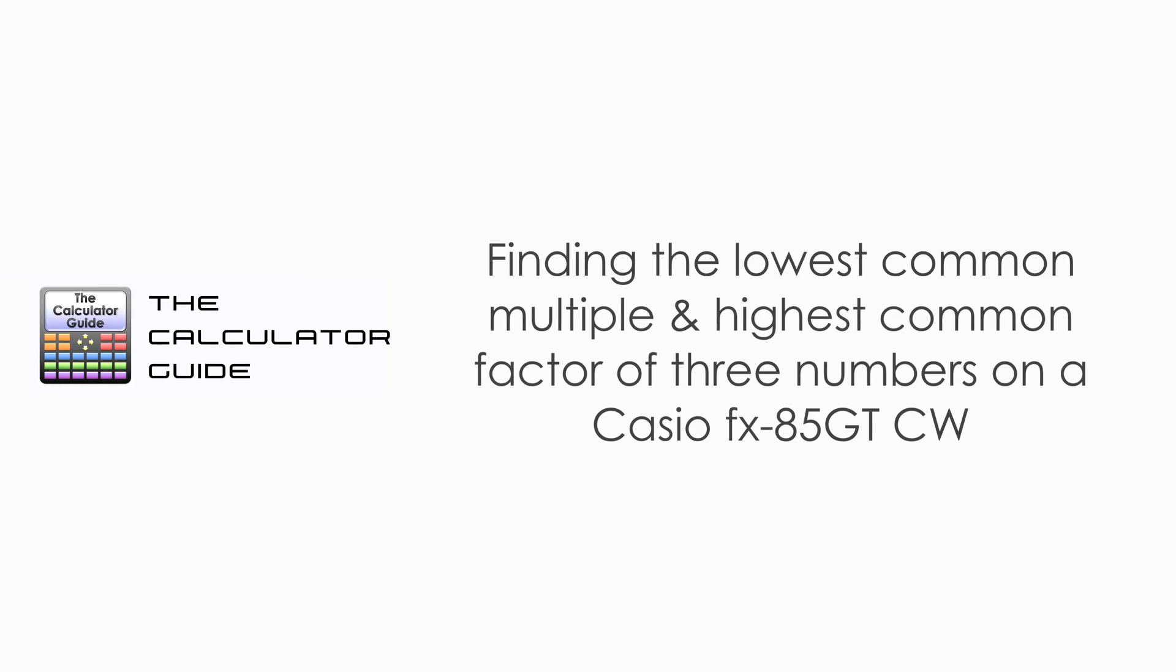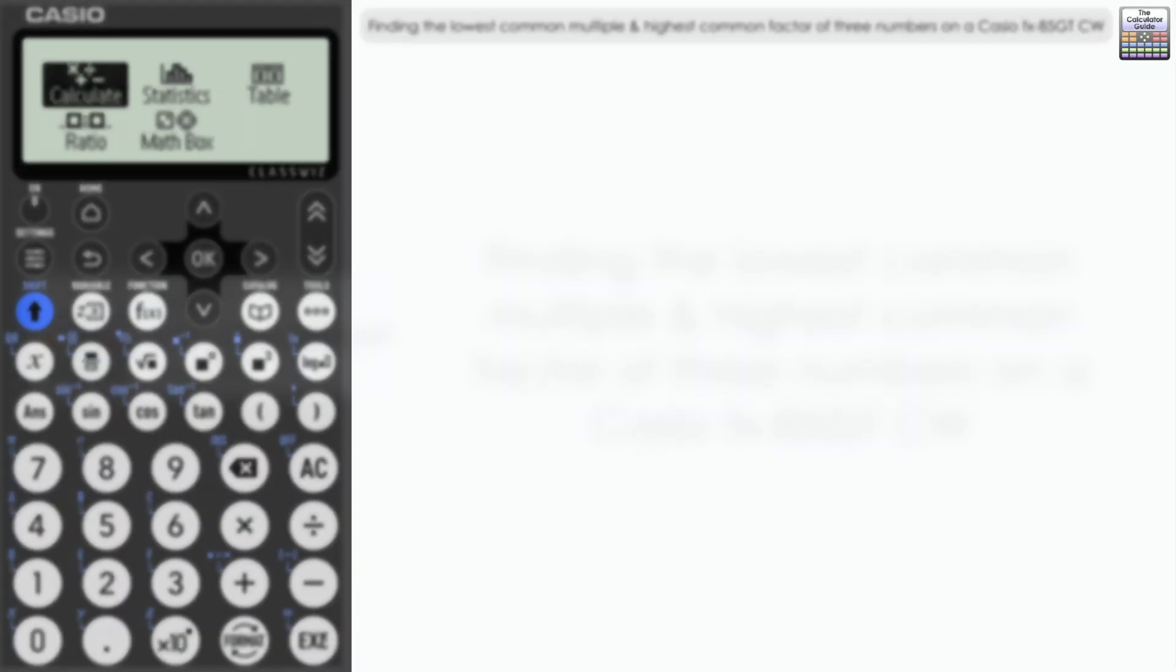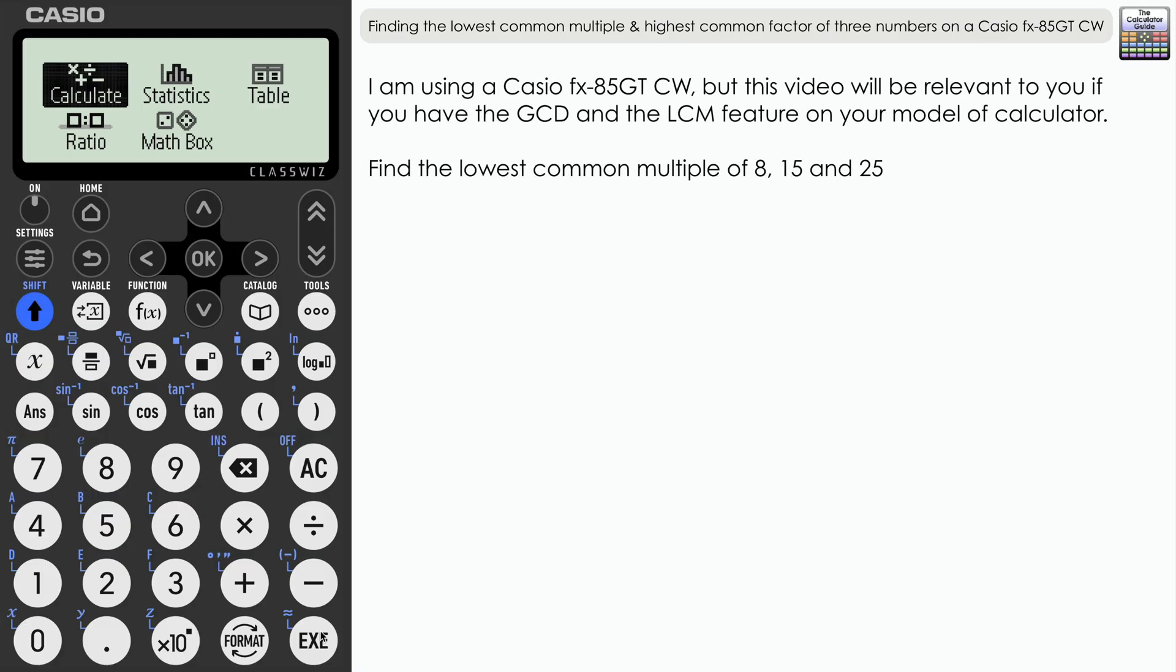Hello and welcome to the Calculator Guide video on finding the lowest common multiple and highest common factor of three numbers on a Casio fx-85. I'm showing you this on the fx-85GT CW model, but if your calculator has the GCD function (the greatest common divisor) and the LCM (the lowest or least common multiple) feature, then this video is going to be relevant for you.